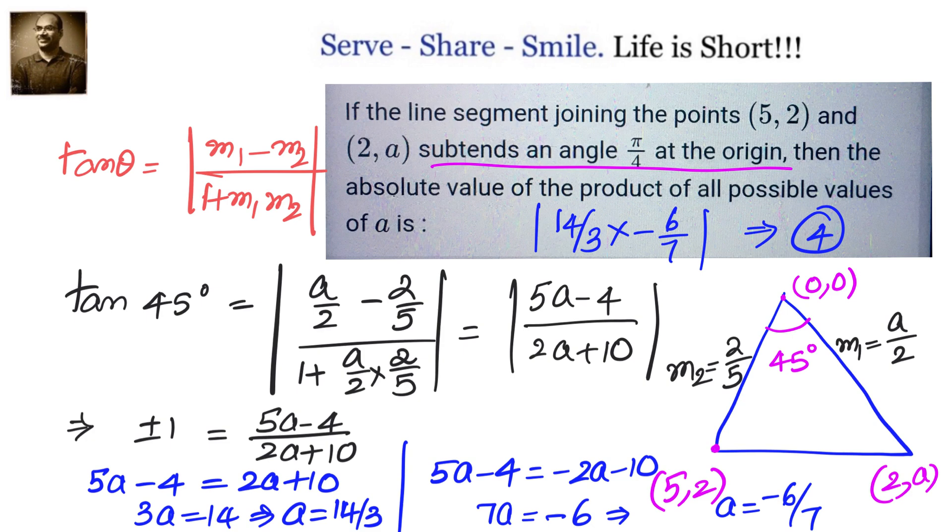If the line segment joining the points (5,2), (2,a) subtends angle π/4 at the origin, then the absolute value of the product of all possible values of a is 4. So here we have to understand that they are simply giving a triangle with 3 vertices, and the angle between 2 sides is 45 degrees. Once we understand that, then we can easily use the angle between 2 lines formula and solve this problem easily.